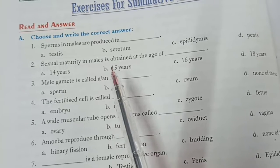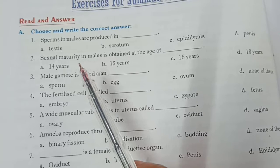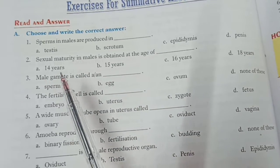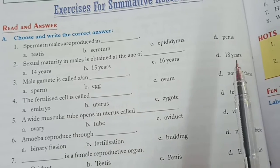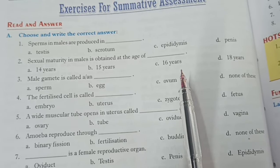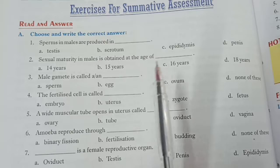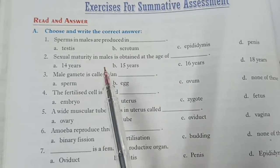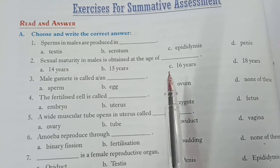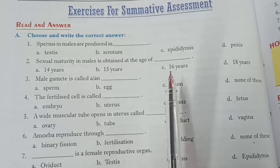Second question: sexual maturity in males is obtained at the age of. Males mein sexual maturity kis age mein obtain hoti hai? Options are 14 years, 15 years, 16 years, and 18 years. Bacche, aap apne book ke according 16 years likhenge. But different books mein different ages di gayi hain, so 14 to 16 age range hai jis mein male sexual maturity obtain karte hain. According to your book it will be 16 years.